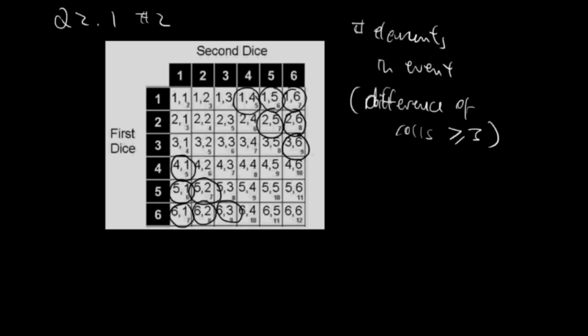So we have the answer, we just counted out 1, 2, 3, 4, 5, 6, 7, 8, 9, 10, 11, 12 - 12 elements.